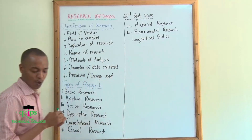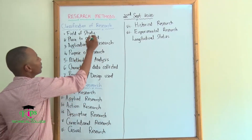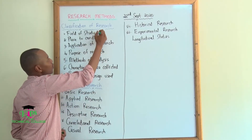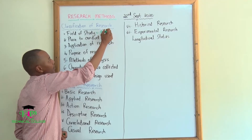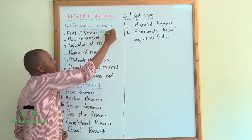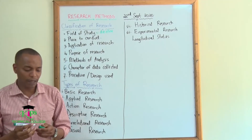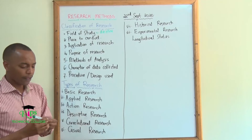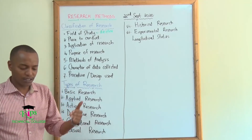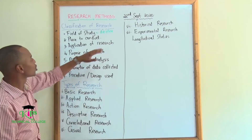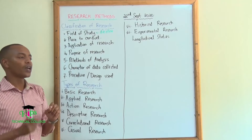First, you have to look at the field of study. In the field of study, what you usually talk about is the discipline. You want to understand which discipline — is it for educational research, is it for sociological research, and so on.